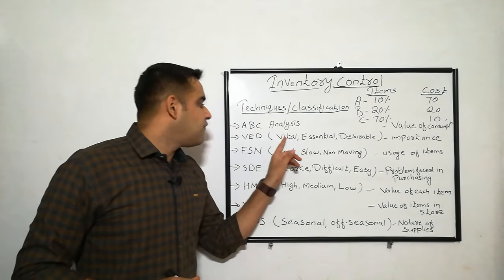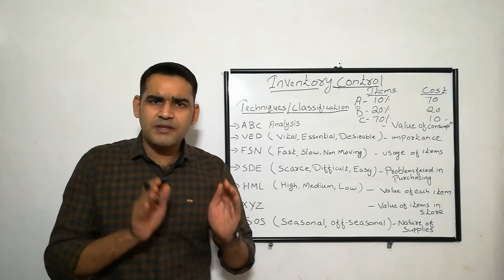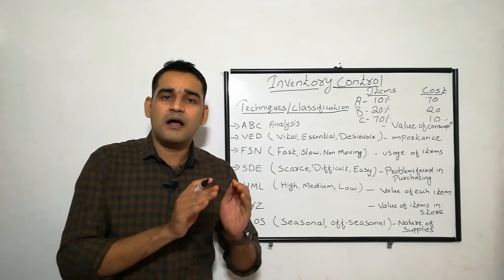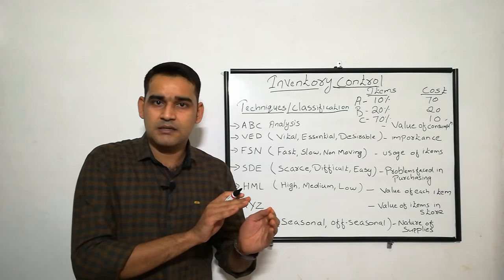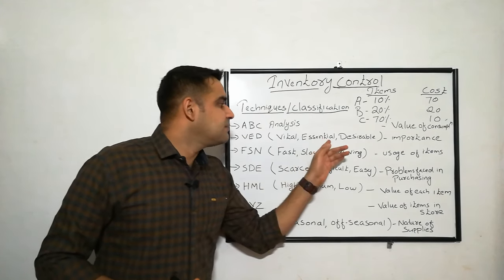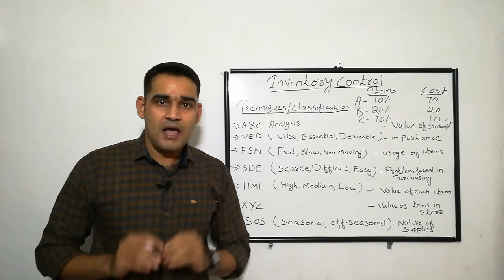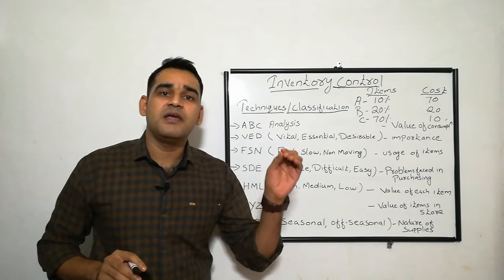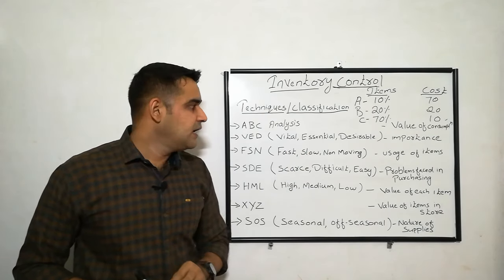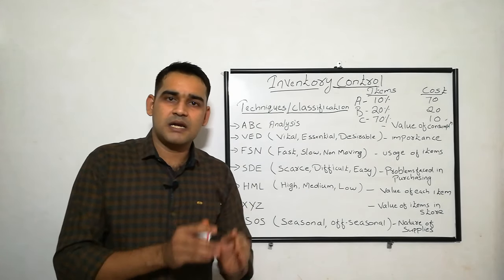E stands for Essential. Without essential items, the hospital can run, but it will affect the quality. The working of the hospital won't be troubled, but you have to compromise on quality. Essential items include antibiotics, IV drugs, or IV infusions. D stands for Desirable — without desirable items, the hospital can run and it will not affect the quality either. For example, cough syrup or vitamin tablets — you can get alternatives.